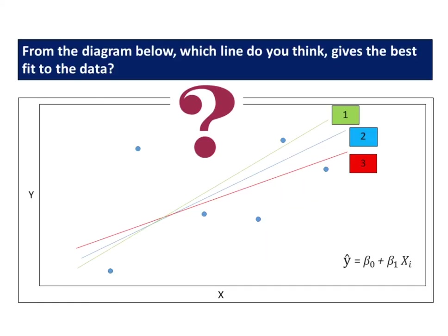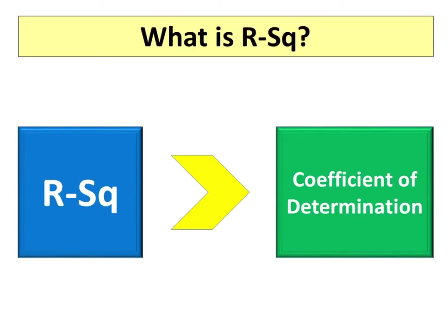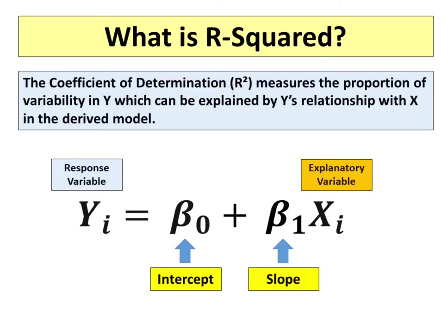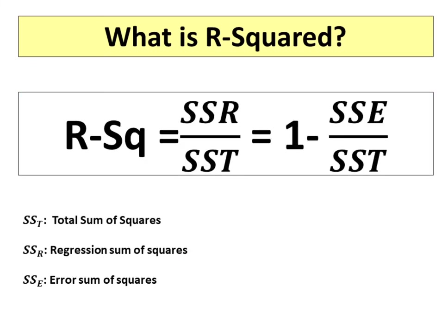A question now is: how well does the estimated regression equation fit the data? In this section, we show that R-squared provides a measure of the goodness of fit for the estimated regression equation. R-squared is also known as the coefficient of determination. It measures the proportion of variability in y which can be explained by y's relationship with x in the derived model. R-squared is the regression sum of squares divided by the total sum of squares, or 1 minus error sum of squares divided by total sum of squares.